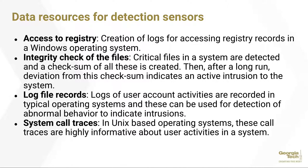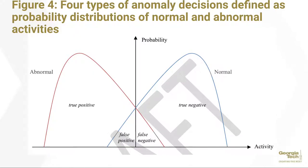Data resources for detection sensors include access to registry — creating logs for accessing registry records in a Windows operating system — integrity checks of files, log file records, and system call traces. Broadly speaking, there are four different types of anomaly decisions based on probability distributions of normal and abnormal activity.